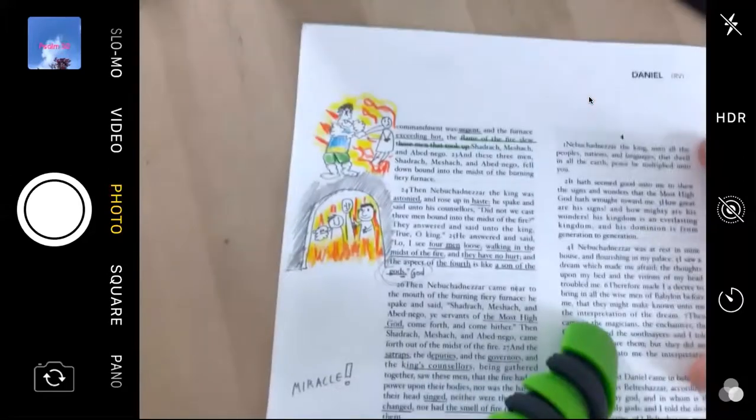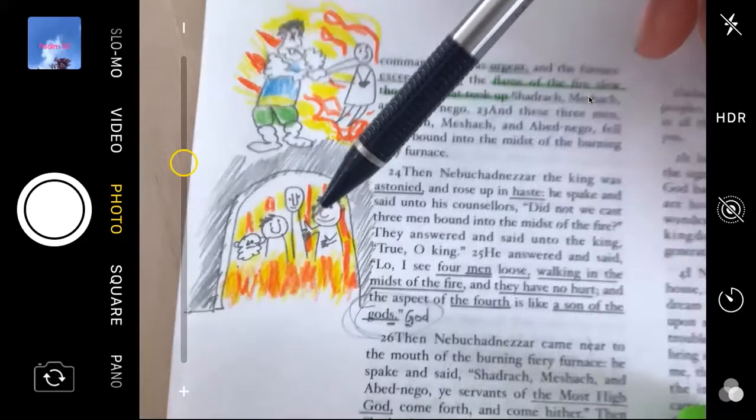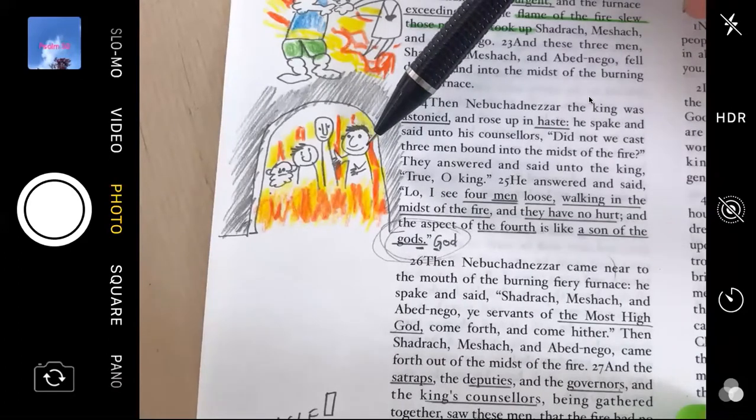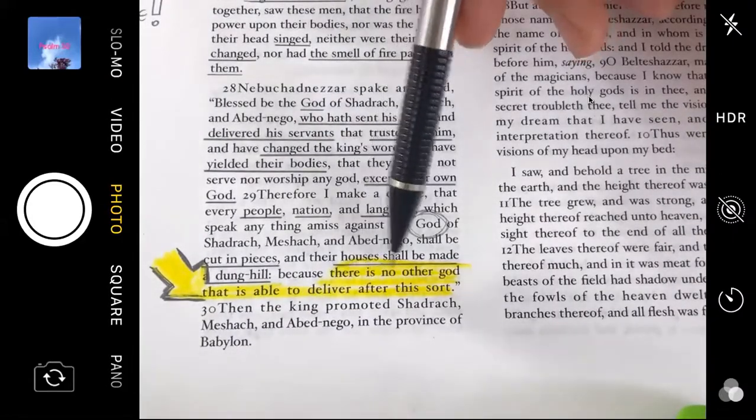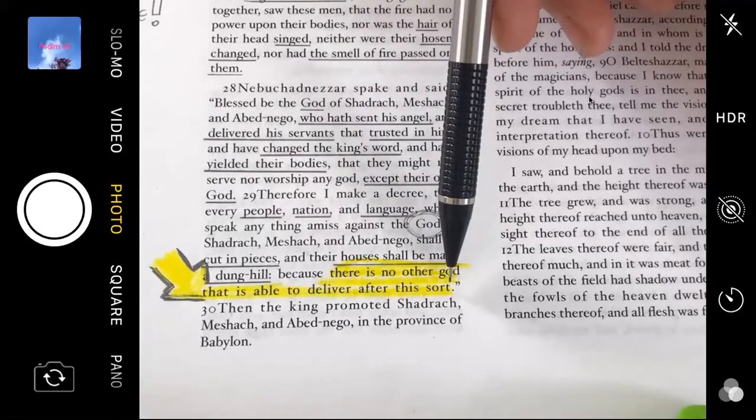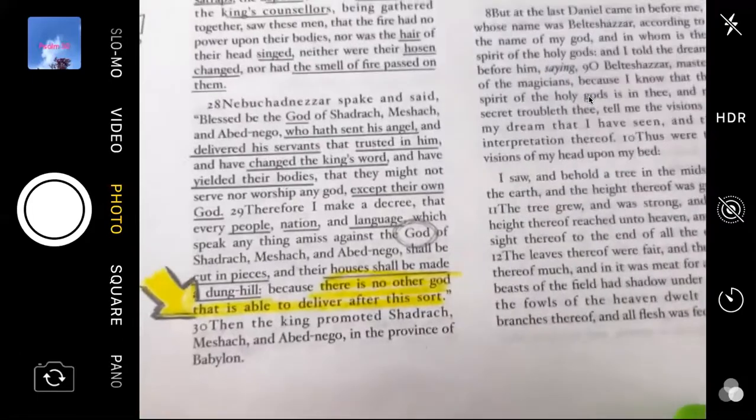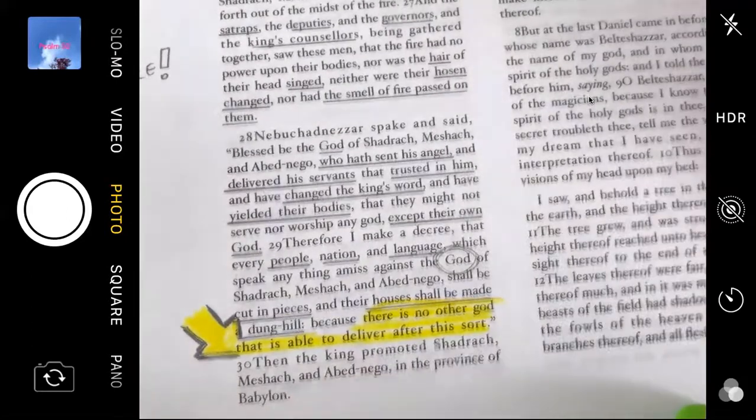So I'll get my screen sharing. Now, the last story that we looked at was Shadrach, Meshach, and Abednego being cast in the fiery furnace, and the fourth person shows up. And this is so impressive to King Nebuchadnezzar that he says that there is no other god that is able to deliver after this sort.